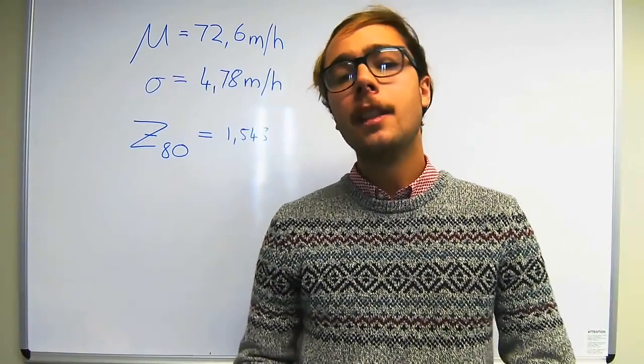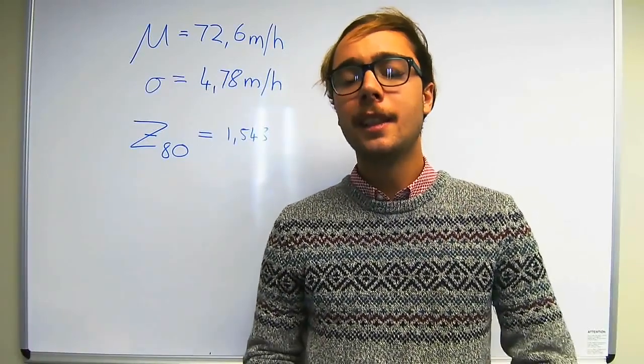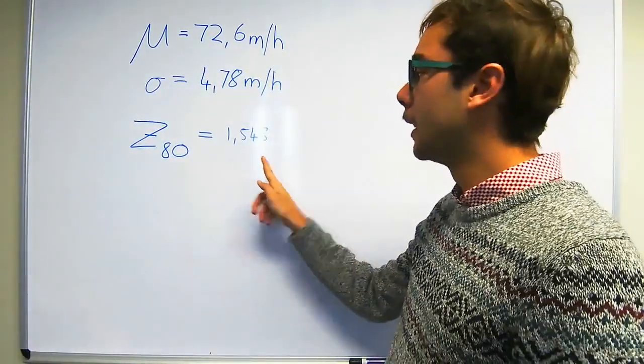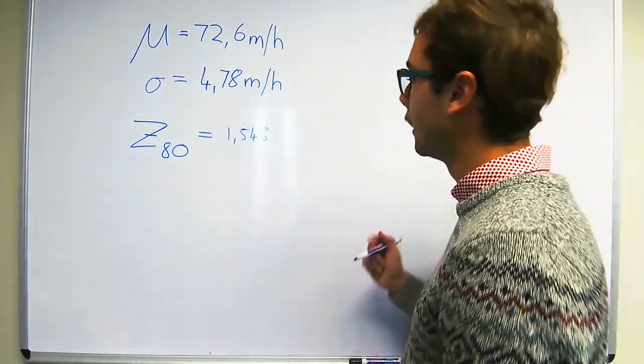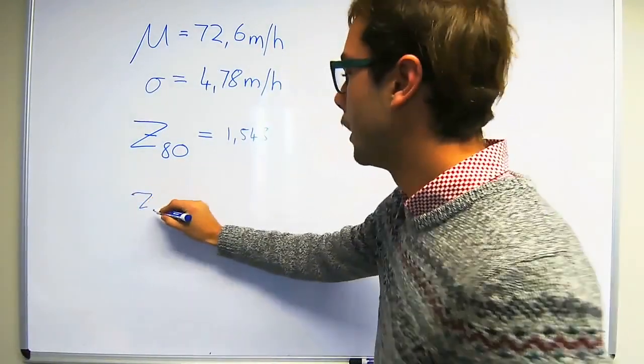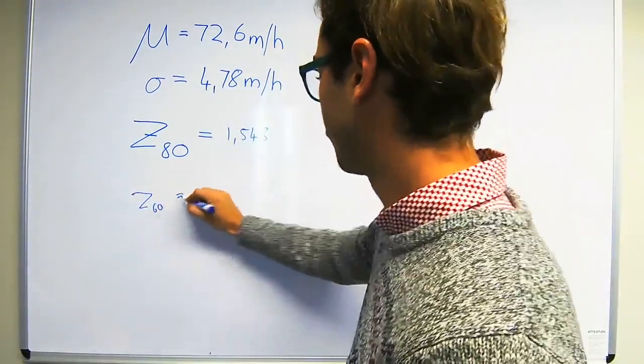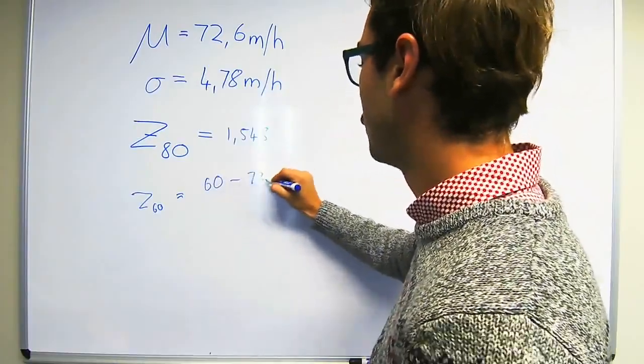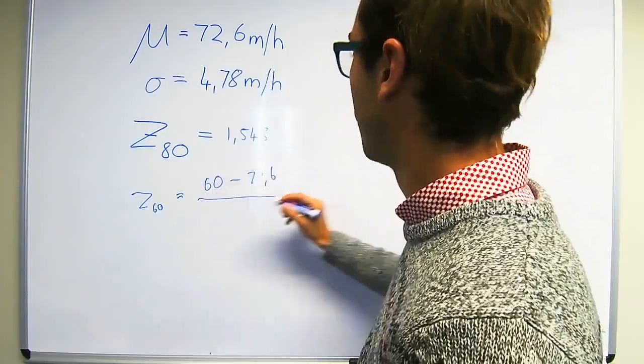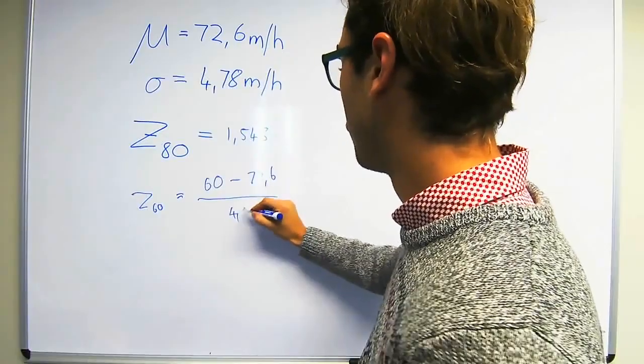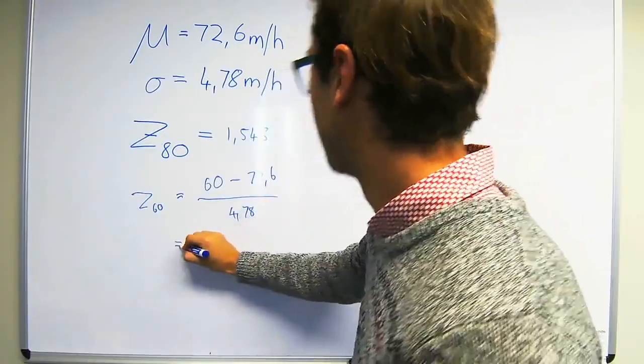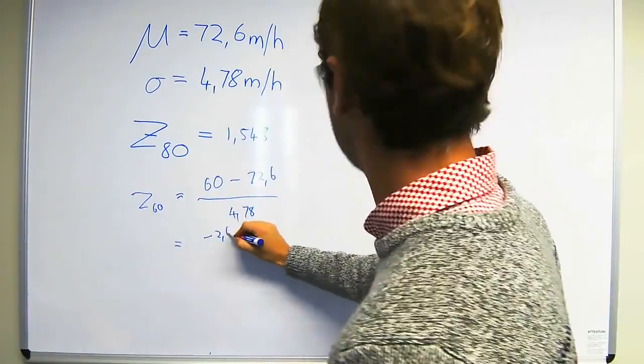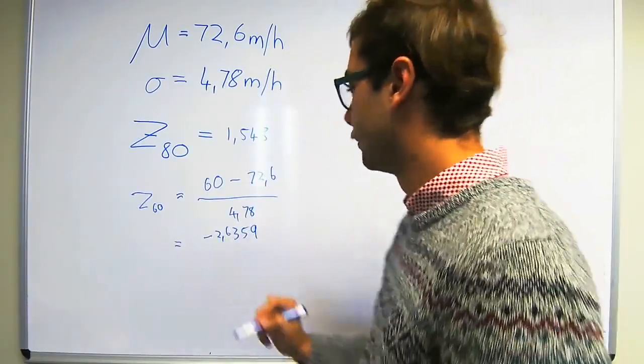Next they ask us what percentage of passenger vehicles travel between 60 and 80 mph? We've already normalized 80 to find Z-80. Now we just need to find Z-60. The Z-value associated with 60 is the observation which is 60 minus the mean which is 72.6 over the standard deviation which is 4.78. And that gives us minus 2.6359.